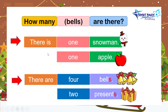If there is only one, we say there is one. There is one snowman. There is one apple. If there are more than one, we say there are. There are two presents. There are four bells.